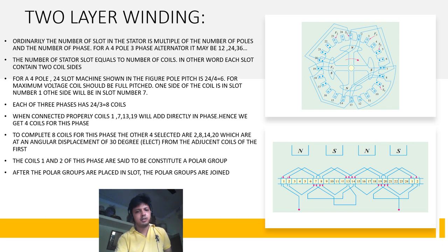After the coils are placed in the slots, the polar groups are joined. These groups are connected together with alternating poles reversed, which shows the winding for one phase only.